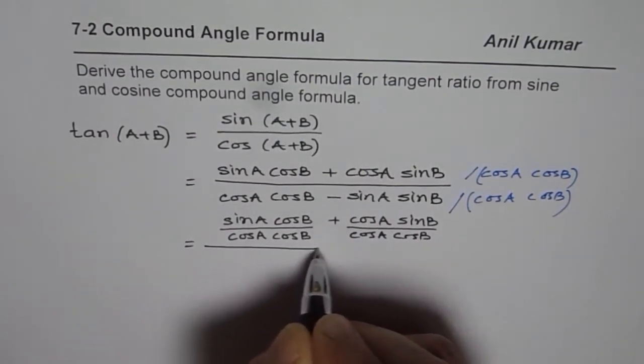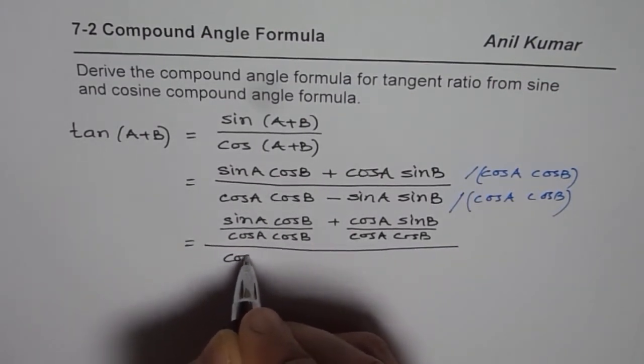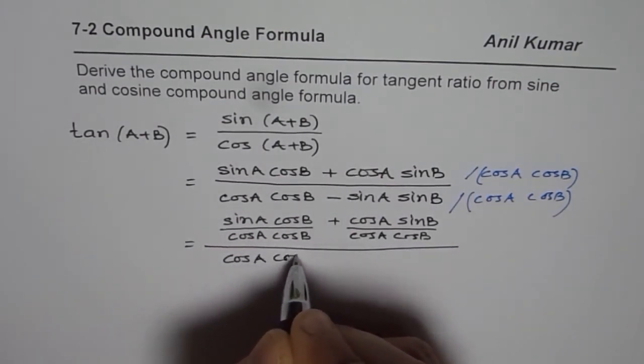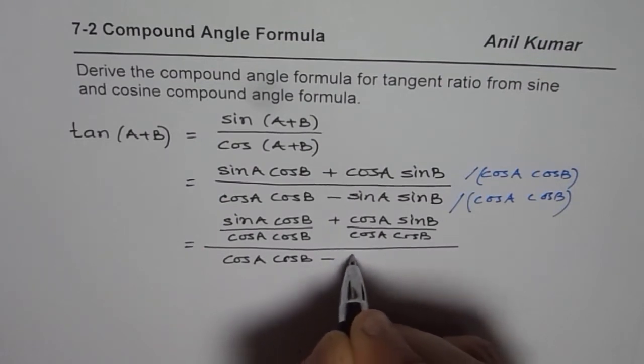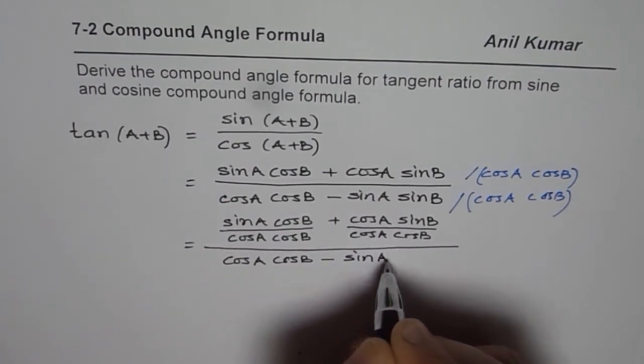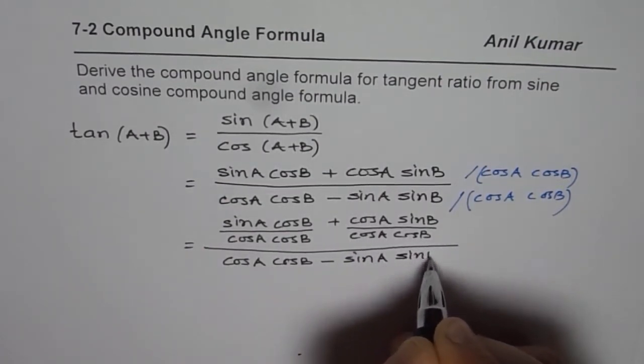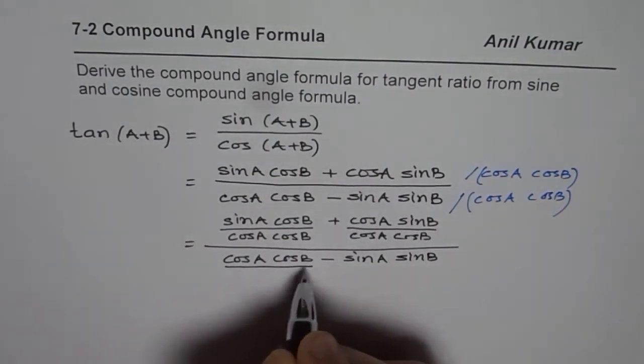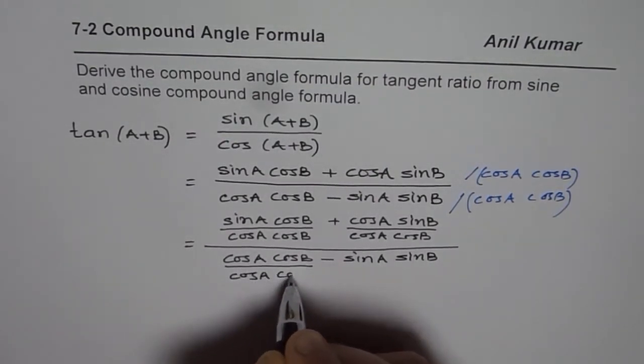In the denominator, we have cos A cos B minus sine A sine B, and we are dividing everything by cos A cos B.